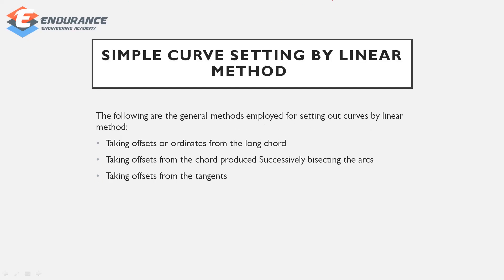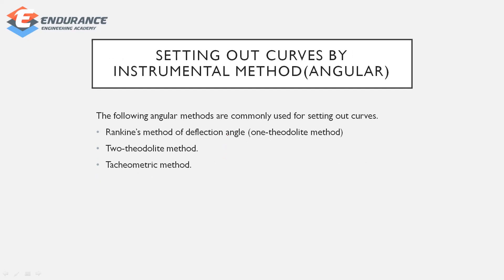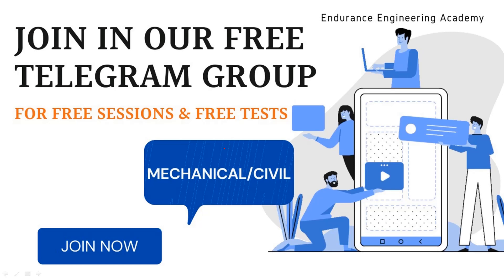Simple curve setting by linear method includes: taking offsets or ordinates from the long chord, taking offsets from the chord produced successively by setting out arcs, and taking offsets from the tangents. Angular methods include the theodolite method — specifically the Rankine Method of Deflection Angles — and the two-theodolite method, as well as tachymetric methods.